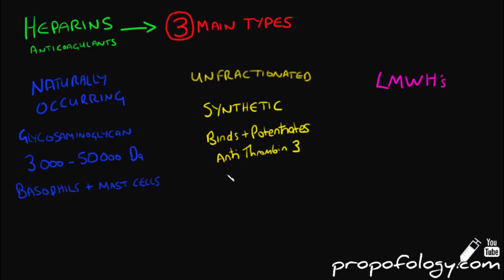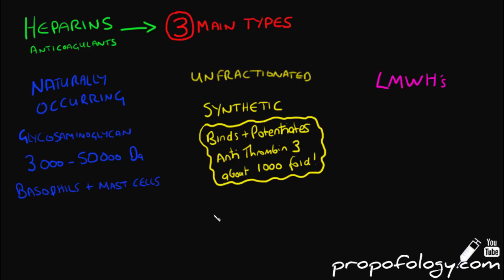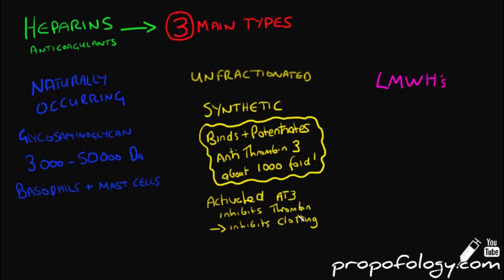Unfractionated heparins are synthetic products that bind and potentiate antithrombin 3 nearly 1,000-fold. Activated antithrombin 3 inhibits thrombin and therefore inhibits clotting. We'll look at this pathway in a minute.